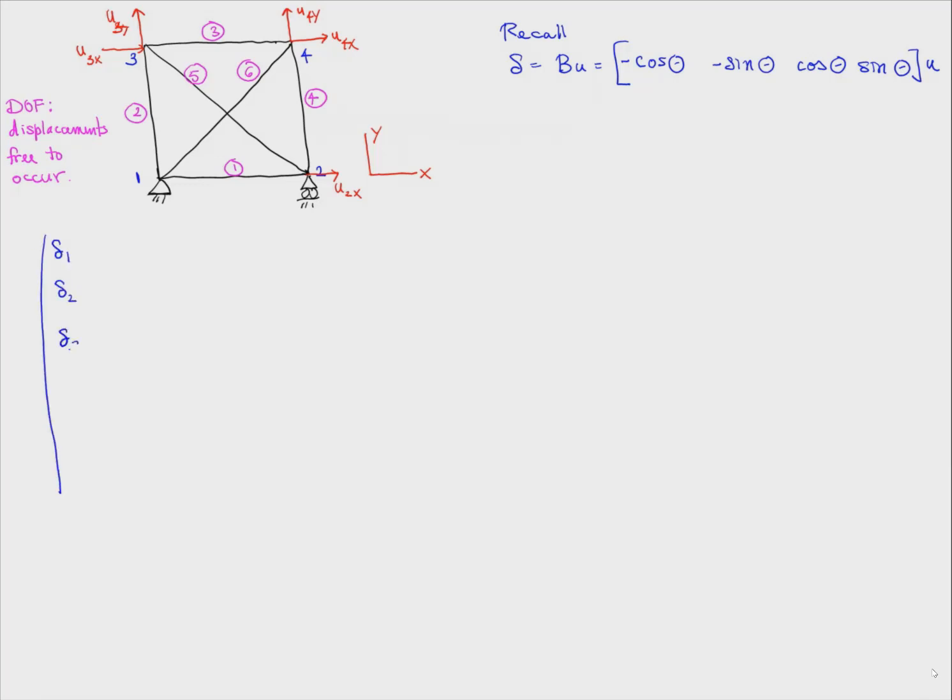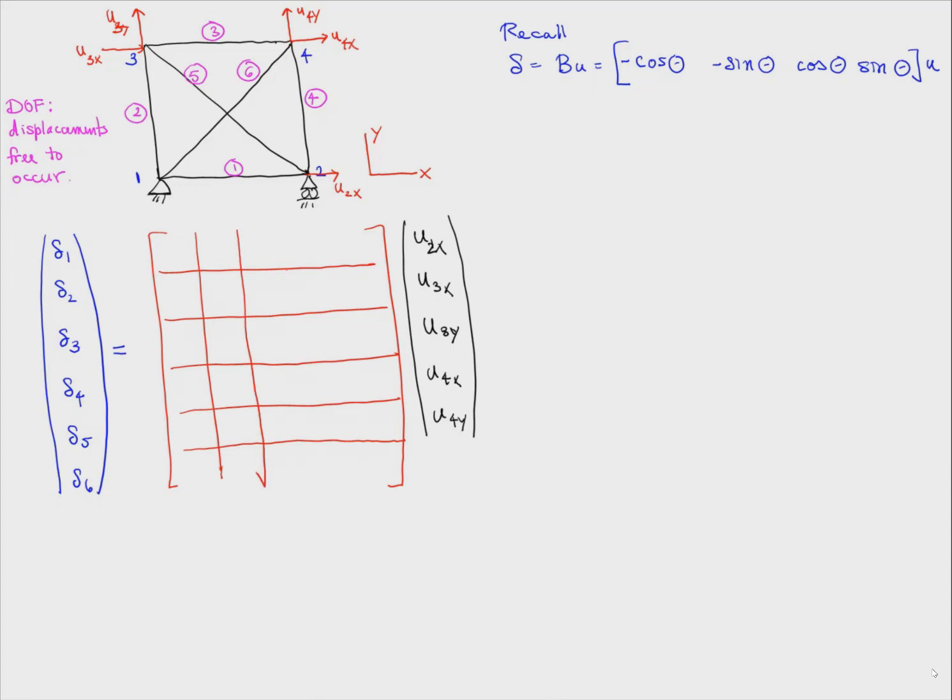Now let's compute the change in length of each member in terms of all the joint displacements. We're going to develop a matrix that does this. This matrix takes all the displacements and produces all the changes in length of the members. Basically, we have to stack up the individual member B matrices we developed in the last video. We notice that for each column, we label it by the corresponding displacement because that column multiplies that displacement.